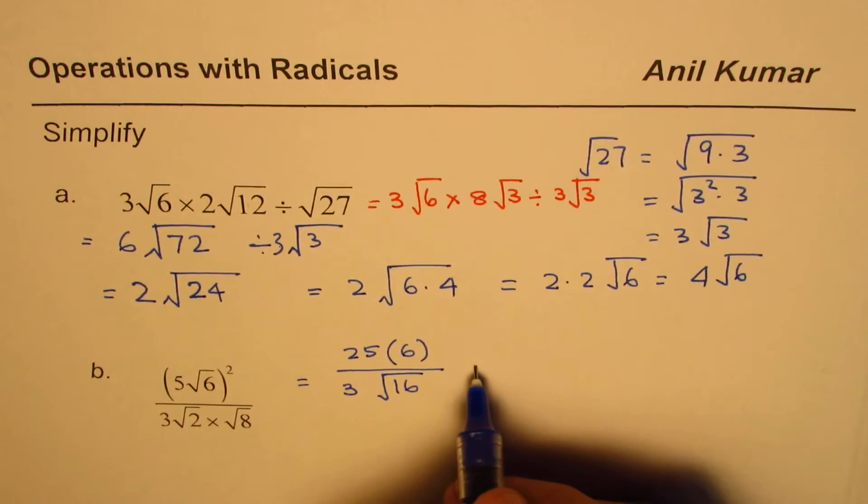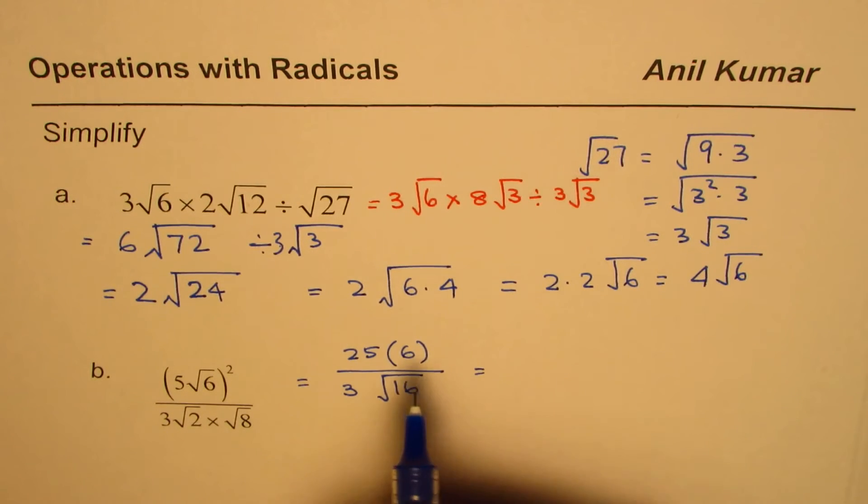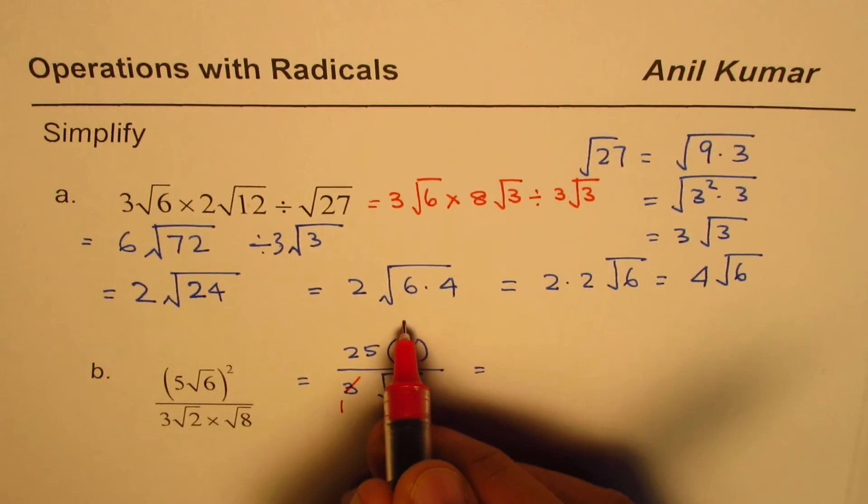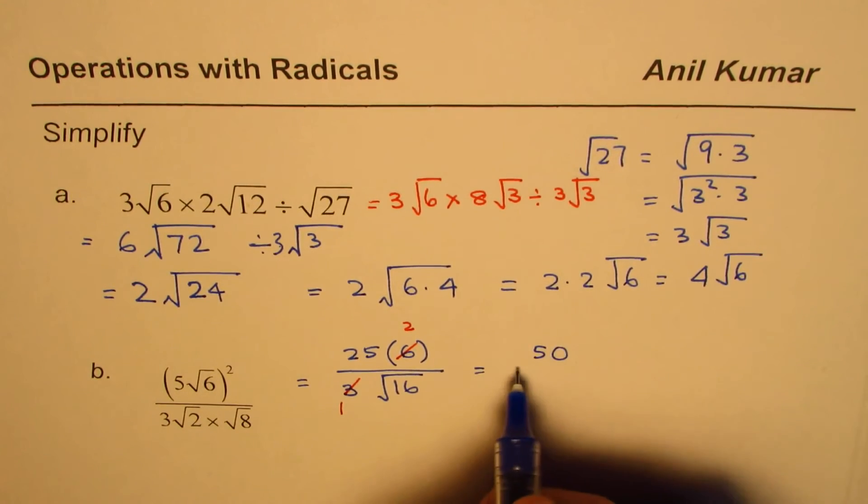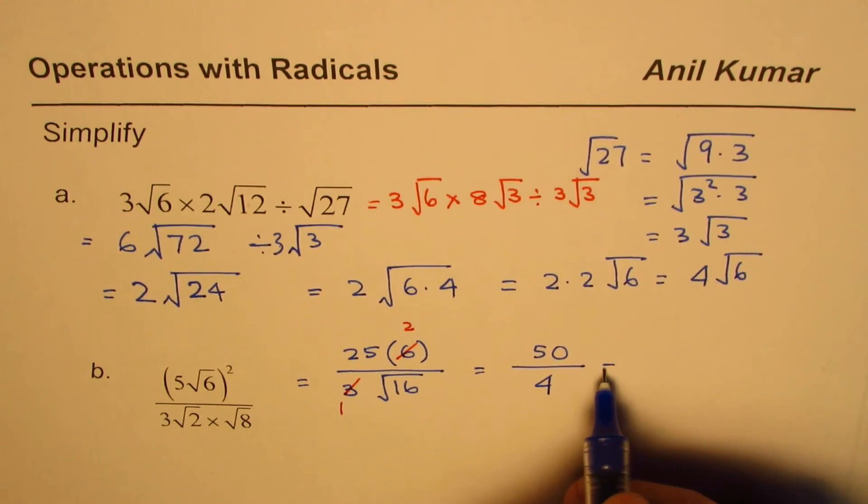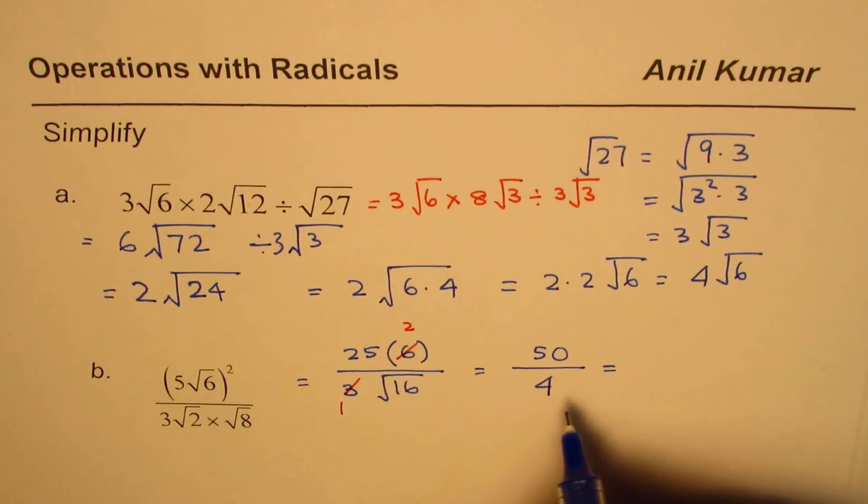We can simplify it. This could be written as 1 times 2. Let me write down this as 50 over... √16 is 4.